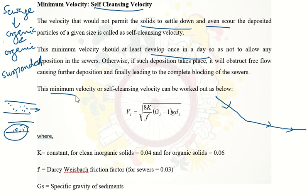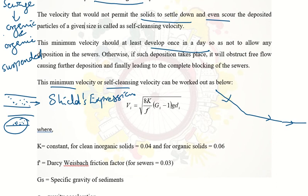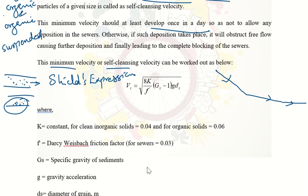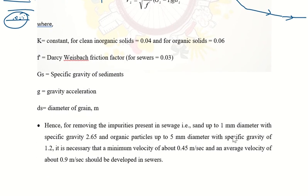For the expression for minimum or self-cleansing velocity, you can use Shield's expression: Vs = √(8K/F × (Gs − 1) × g × Ds), where K is a constant (0.04 for clean inorganic solids, 0.06 for organic solids), F is Darcy-Weisbach constant taken as 0.034 for sewers, Gs is specific gravity of sediments, g is acceleration due to gravity, and Ds is diameter of solids or grains. When designing sewers, minimum velocity should be 0.45 m/s and average velocity should be 0.9 m/s.